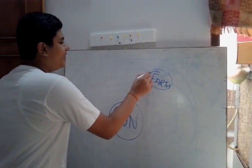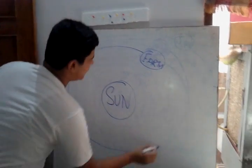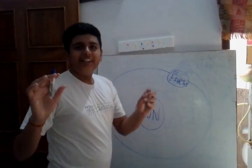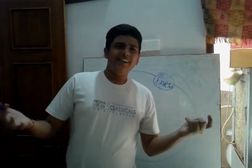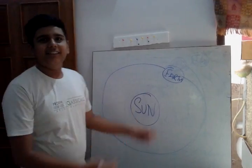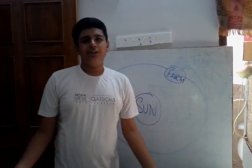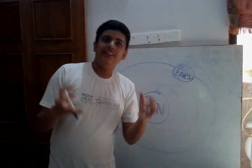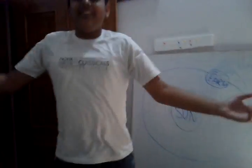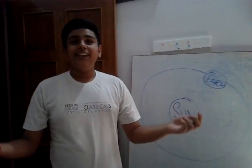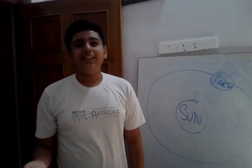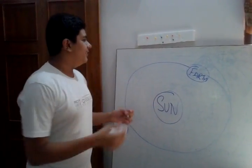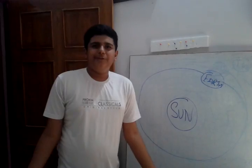Earth travels in an orbit which is elliptical. You might have thought about why and how gravity works — why Earth orbits the Sun. Gravity pulls things down: I jumped because of Earth's gravity, I came down. If Earth's gravity was not there, I would have gone to space and moved around freely.